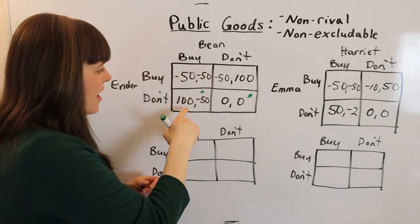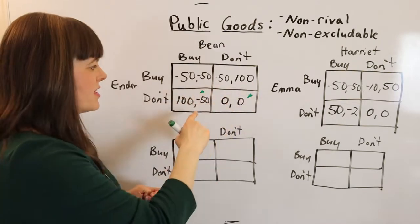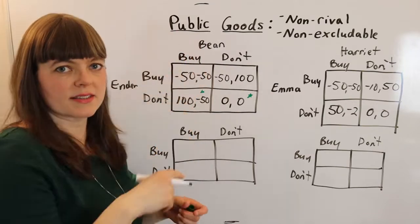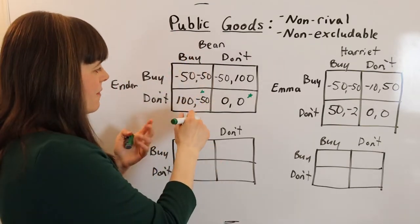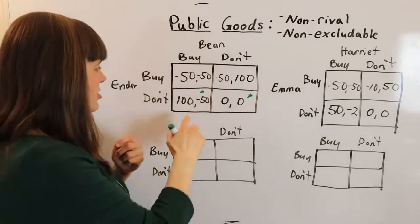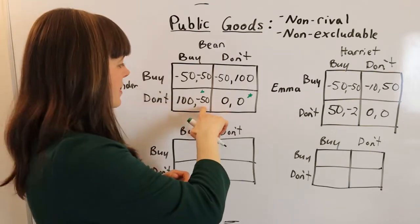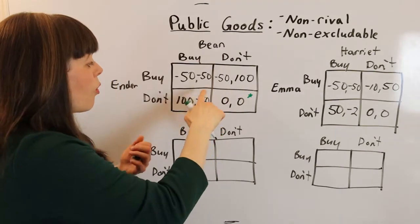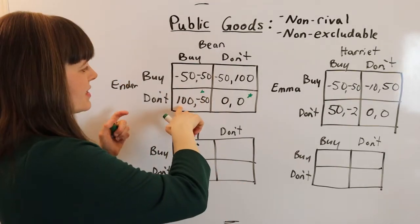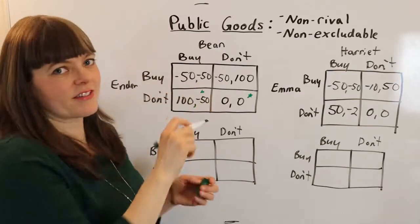Since Bean is worse off buying the TV than if neither of them bought it, we could rectify that by having Ender pay Bean some money. For example, Ender could pay Bean $50, in which case Ender gets 50 utils and Bean gets 0 utils. Or we could split the surplus where Ender pays Bean $75, so they each get $25 of utility.